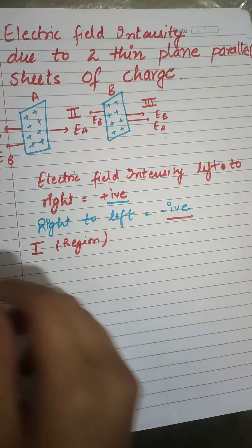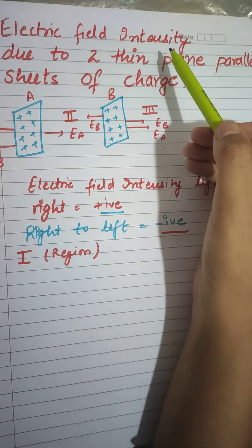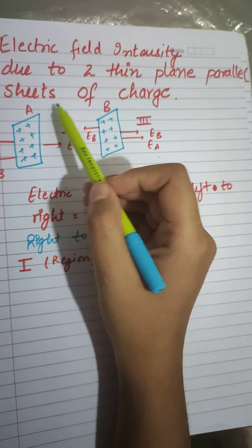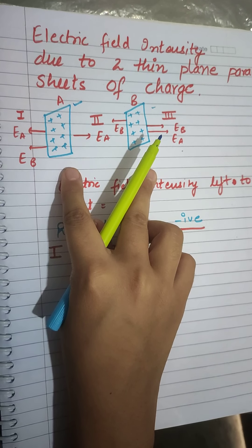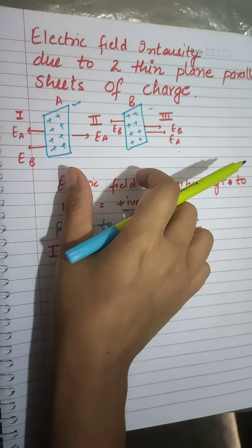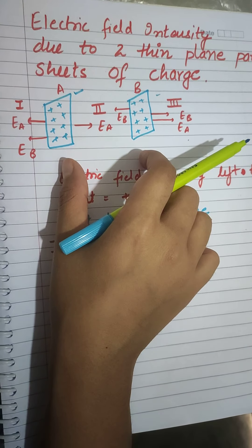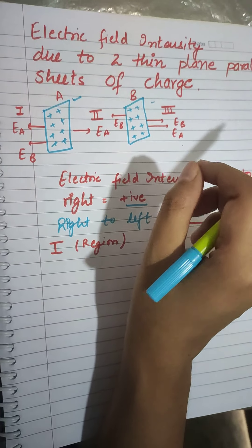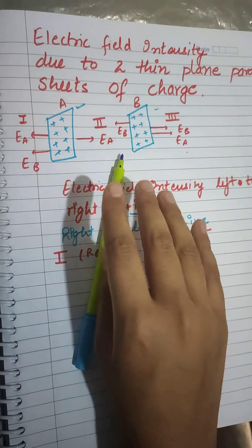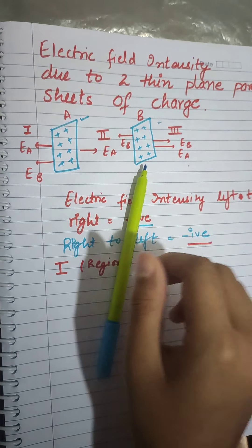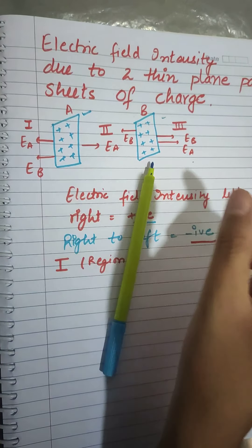So let's see how it will be approached. We need to find the electric field intensity due to two thin plane parallel sheets of charge. I have A and B, two sheets of charge whose thickness is very negligible. Before we find the electric field intensity, the first point is to look at each region and identify the direction of electric field intensity. I have divided them into three regions: the left region, the middle region, and the right region. We will see in these three regions what are the directions of E.